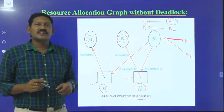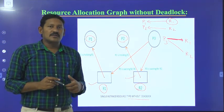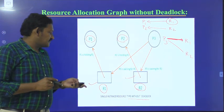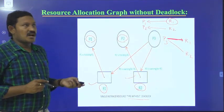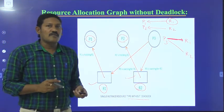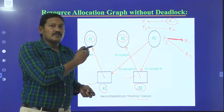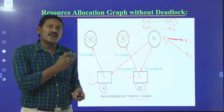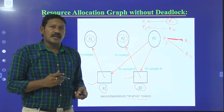This is the Resource Allocation Graph without deadlock. In the previous case we saw the Resource Allocation Graph with deadlock, and this is without deadlock. Hope you have understood the difference between with deadlock and without deadlock. Thank you.